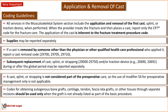A cast, splint, or strapping is not considered part of pre-operative care; therefore, the use of modifier 56 for pre-operative management only is not applicable. Codes for obtaining autogenous bone graft, cartilage, or tendon through a separate incision are to be used only when the graft is not already listed as part of the basic procedure.